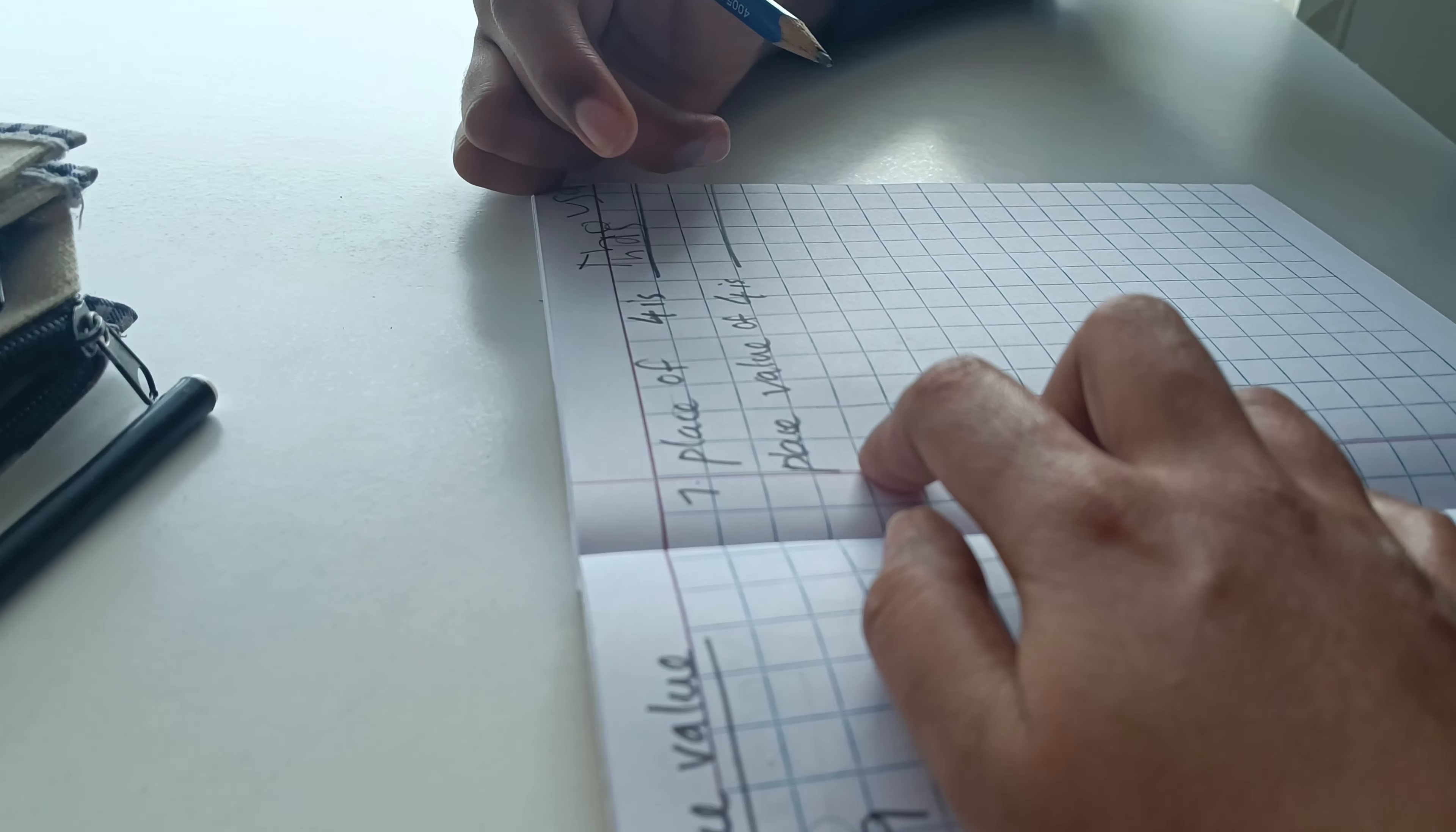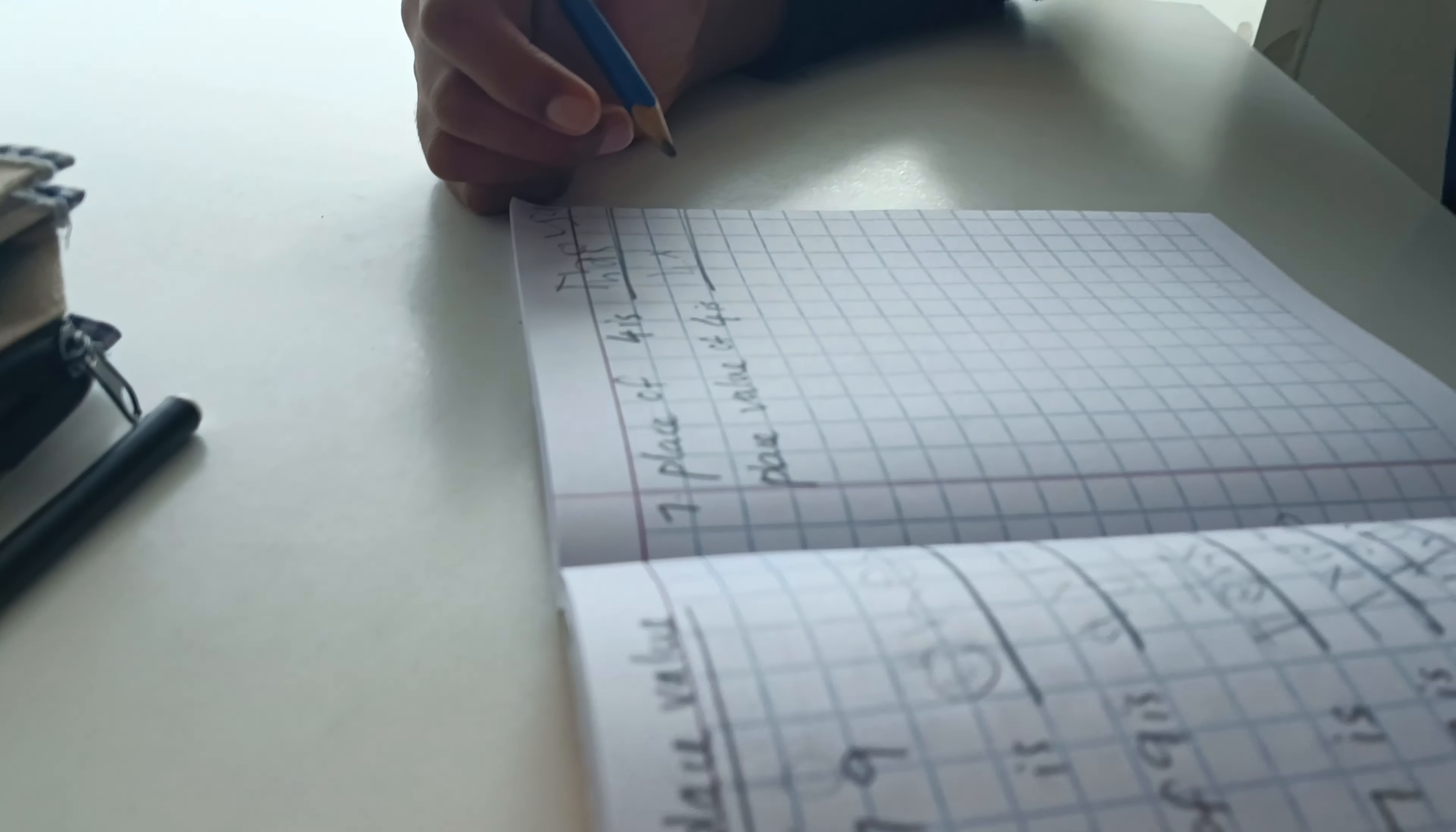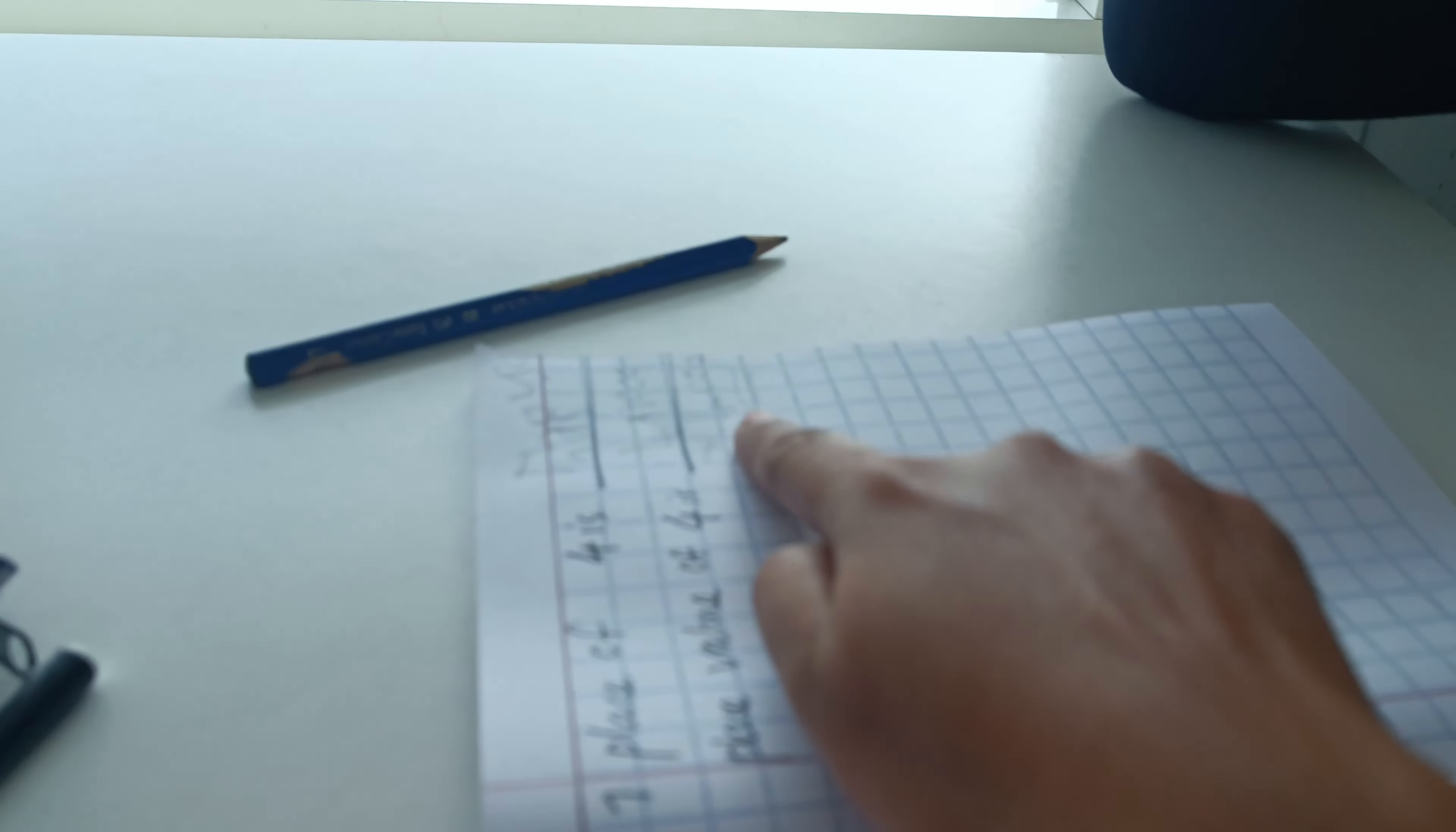What's the place value of four? Four into two. Four into five one, two. Four hundred. What's the place of four? Four thousand. Thousand. Above. Place value of four is four into two equals. What's the answer? Four thousand.